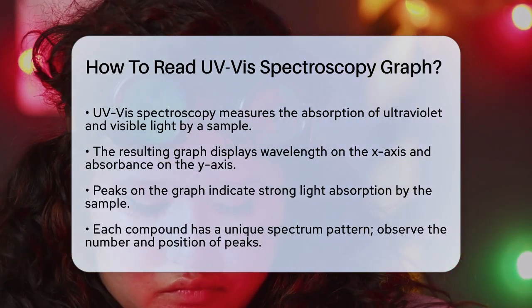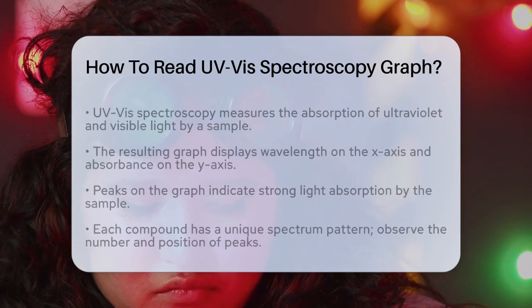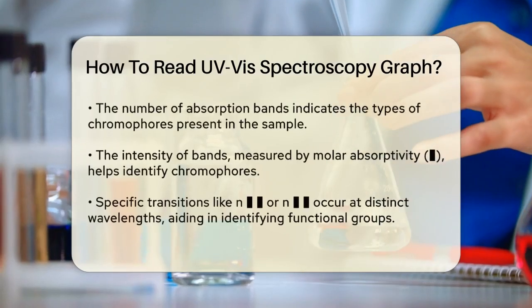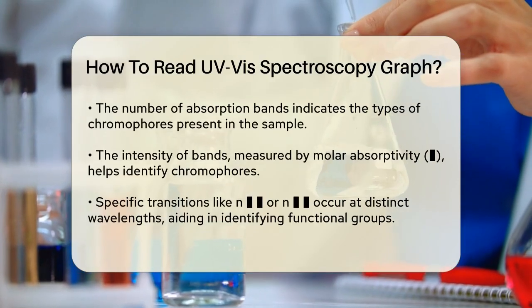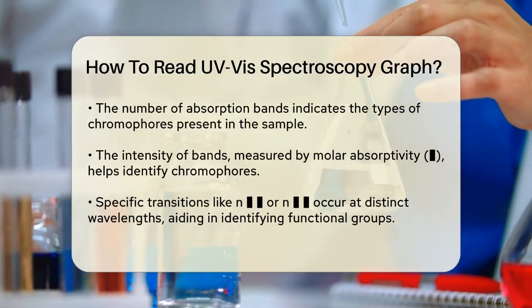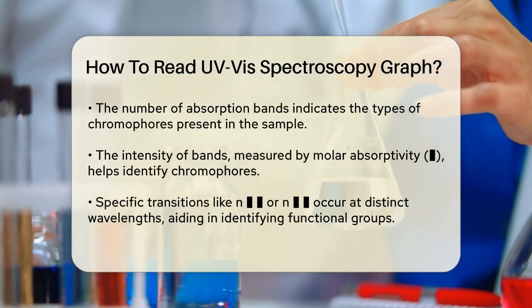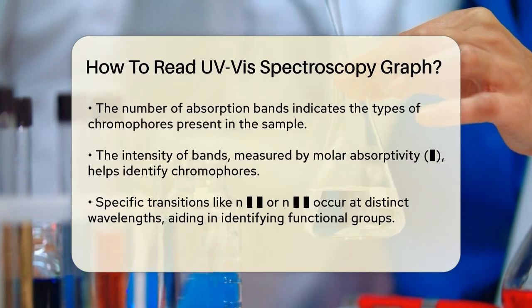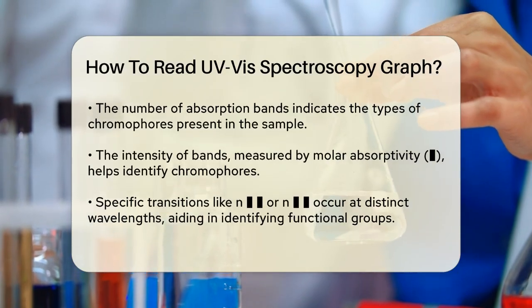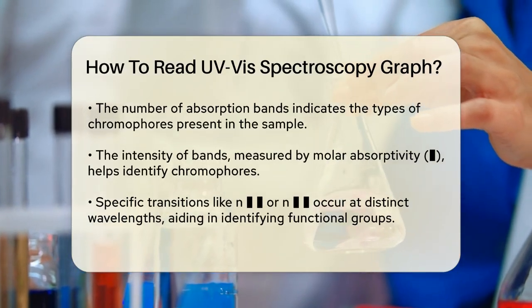First, identify the overall spectrum pattern. Each compound has a unique spectrum pattern — look for the number and position of the peaks. For example, a peak at 217 nanometers might indicate an unsaturated aldehyde or ketone.